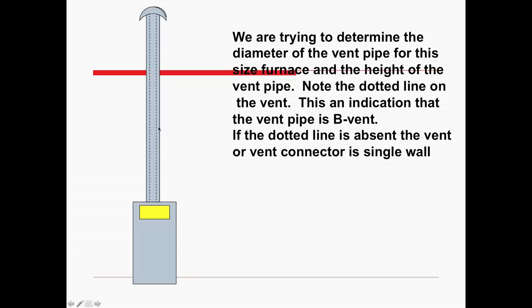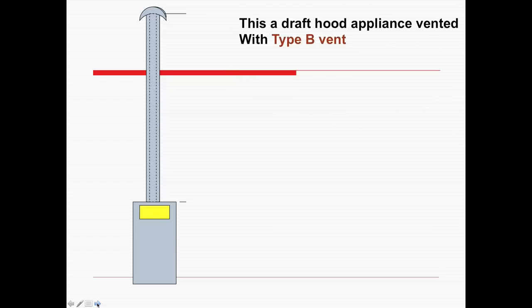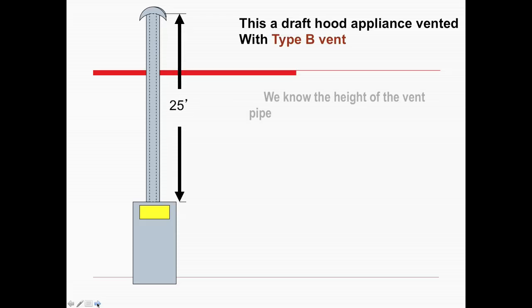We're going to determine the diameter of the vent pipe for this furnace. These dots indicate this is Type B double wall vent. If there is no double wall vent, it'll just be a single line. It's a draft hood appliance. It's 100,000 BTUs, Type B vent. The vent height is measured from the very top of the furnace where the connection to the vent is, to the bottom of the vent termination — 25 feet.